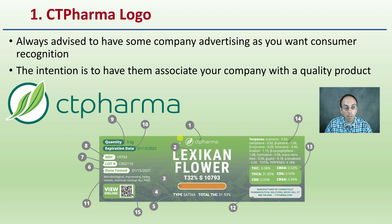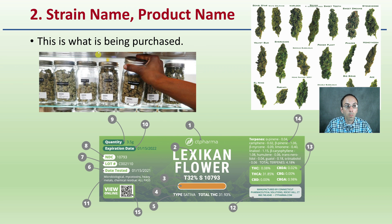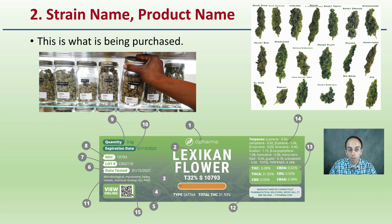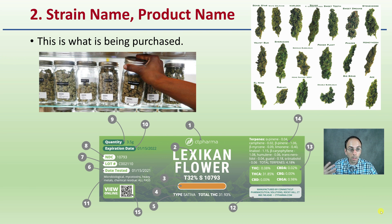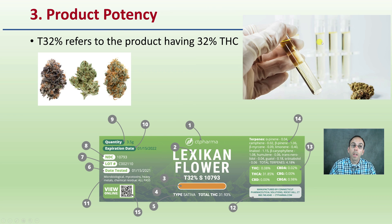Moving down the label to number two, this is related to the strain name and also the product name — in other words, what is actually being purchased. In this case, we're looking at a dry flower example. This does apply to other cannabis-related products as well, but this particular example is referring to dry flower.